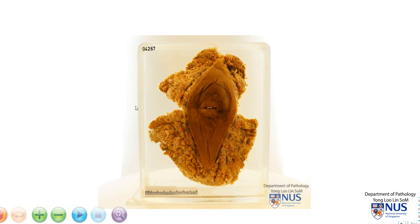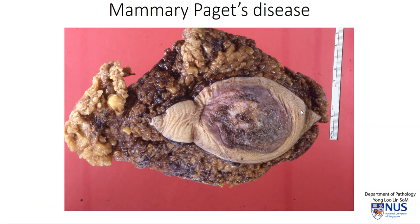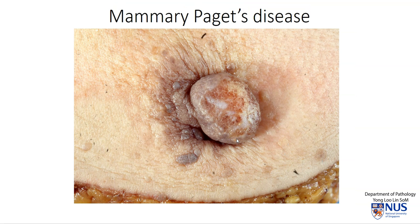Let's have a look at some other examples. Here is an example of an extremely florid case of Paget's disease. The whole nipple is almost destroyed. The skin is very erythematous and very scaly. And here is another example of a more subtle case, where you can see this is the intact normal nipple epidermis.